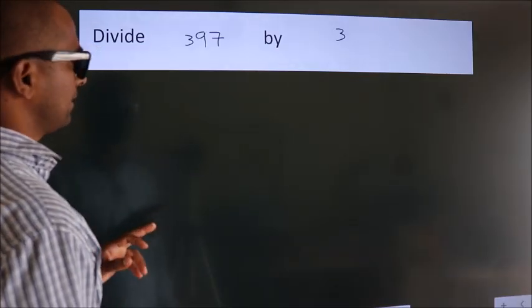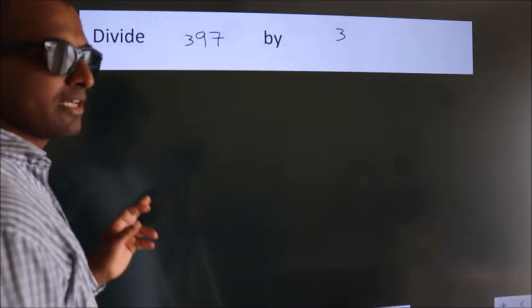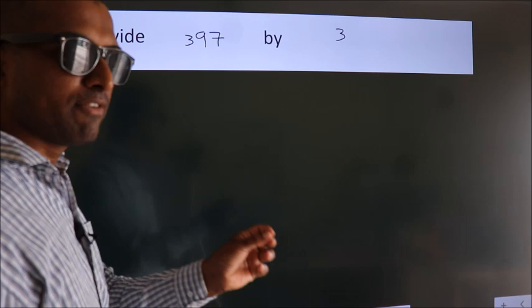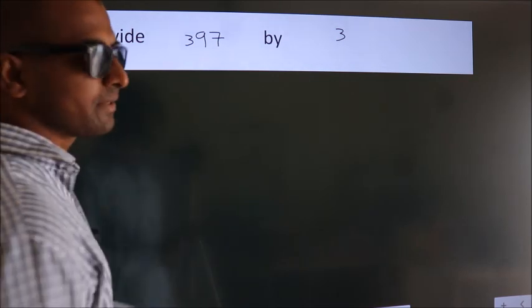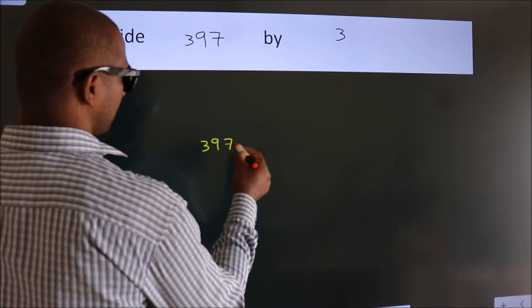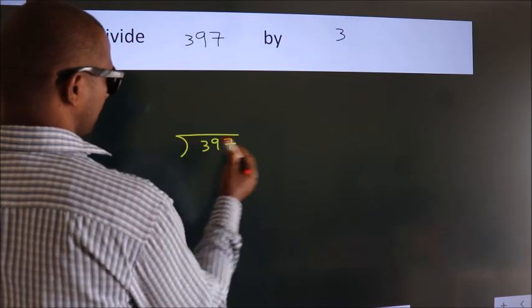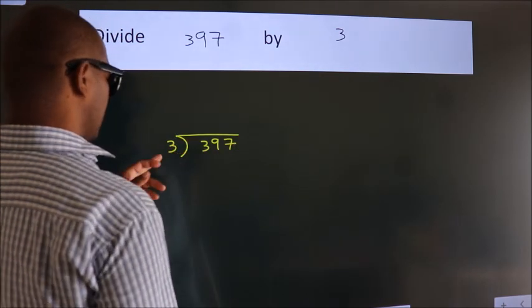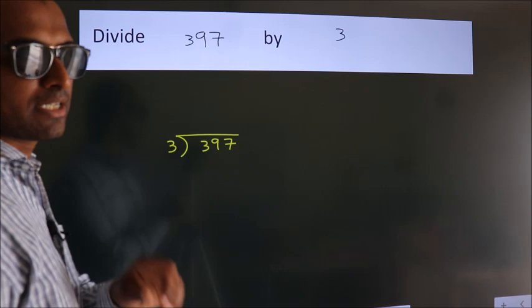Divide 397 by 3. To do this division, we should frame it in this way. 397 here, 3 here. This is your step 1.